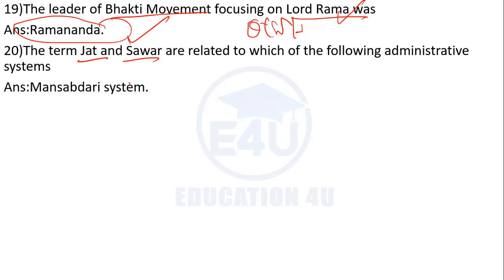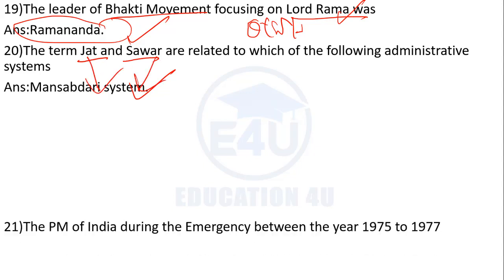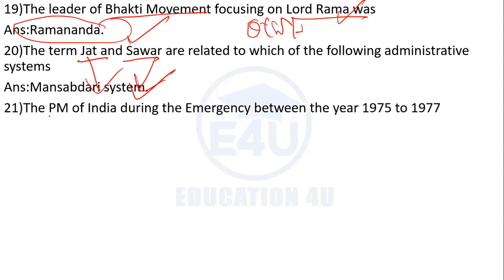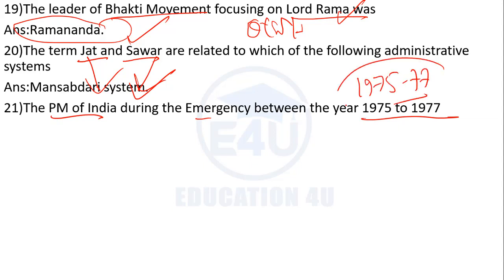Who was the Prime Minister of India during the Emergency period between 1975 and 1977? The Emergency was declared in 1975, and the answer is Indira Gandhi.